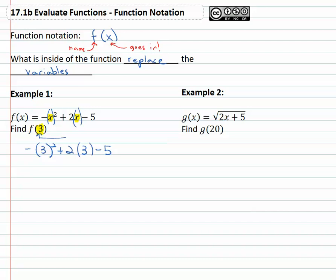Now it's just order of operations to simplify. First we square giving us negative 9 plus 2 times 3 minus 5. Next we multiply negative 9 plus 6 minus 5 and then we can add and subtract from left to right negative 9 plus 6 is negative 3 minus 5 is negative 8.